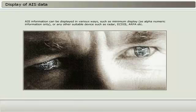AIS information can be displayed in various ways, such as minimum display, as alphanumeric information only, or any other suitable device such as radar, ECDIS, ARPA, etc.